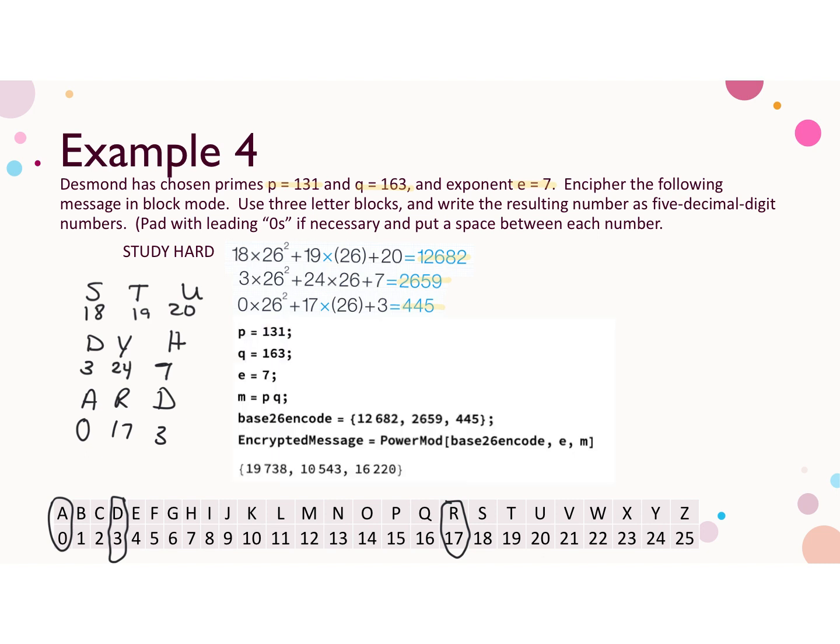So here is the Mathematica code we'll need to accomplish this. I enter the values of p and q, and remember the semicolon at the end of the line suppresses output, so when you execute this you just won't see a repeat back of those values. Similarly, e, and m is p times q. If you list those variables with a space, Mathematica assumes multiplication, so it will calculate that correctly.